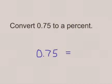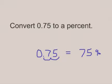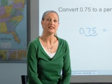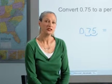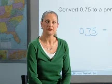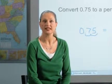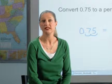When students have developed a solid conceptual understanding of the relationships between decimals and percents, they can then be introduced to the traditional procedure for converting decimals and percents by moving the decimal point two places. If appropriate sense-building has been developed, students will make fewer errors in the placement of the decimal point when converting decimals to percents and vice versa.